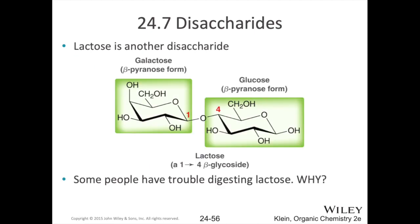Lactose is a disaccharide formed by galactose and glucose. Unlike cellobiose where you have two glucose molecules linked by a 1,4-beta-glycosidic linkage, here the electrophilic monosaccharide on the left has been swapped out with galactose. You've probably heard of lactose intolerance — people who have trouble digesting lactose don't have the necessary enzymes to break down this linkage to get the galactose and glucose out. So it stays as lactose, and people with lactose intolerance are unable to digest it into its monosaccharides.